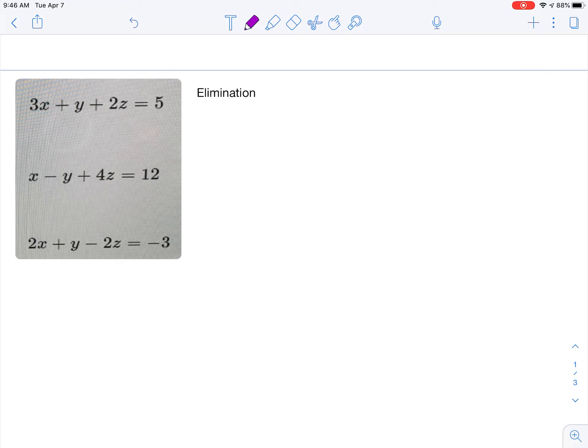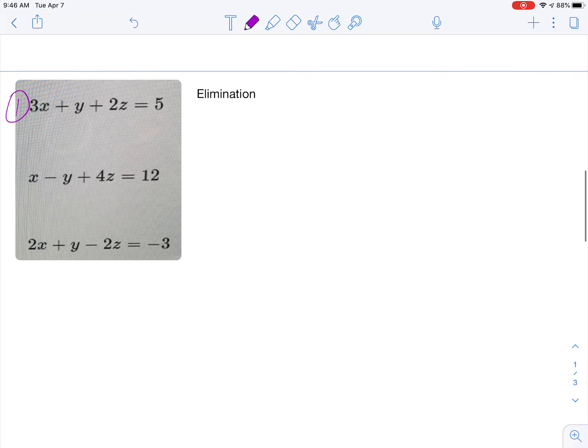So to eliminate the z's I'm going to start with the first and the third equation because they're set up already to eliminate. So the first and the third I'm going to do 3x plus y plus 2z equals 5 and then 2x plus y minus 2z equals negative 3. So that one's going to be pretty easy because right now the z's will already cancel when I add. And so I'm going to get 3x plus 2x is 5x, y plus y is 2y, the z's cancel, and then 5 minus 3, 5 plus negative 3 is 2.